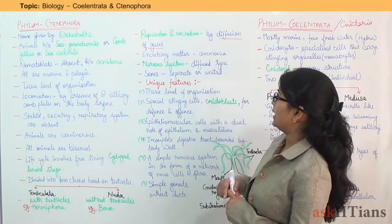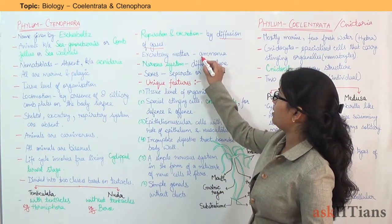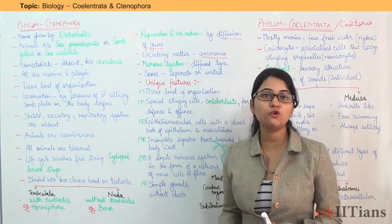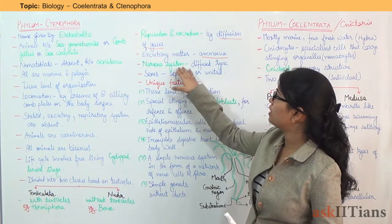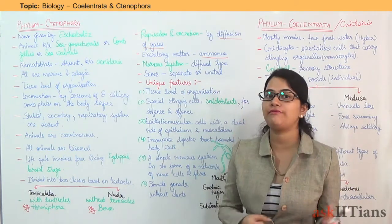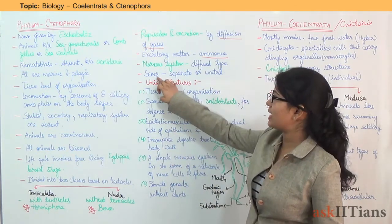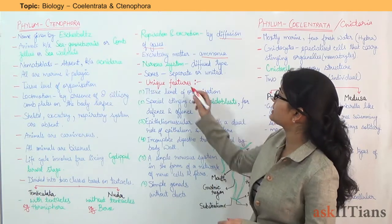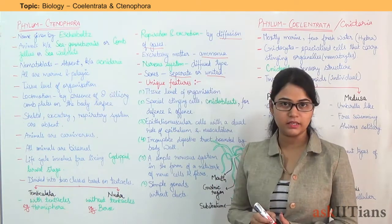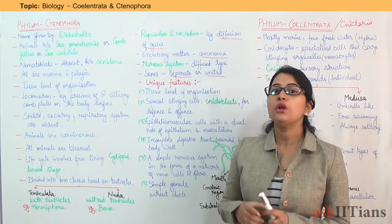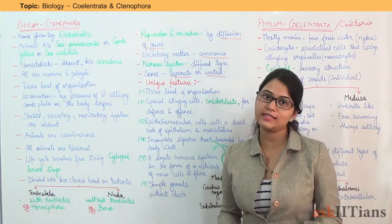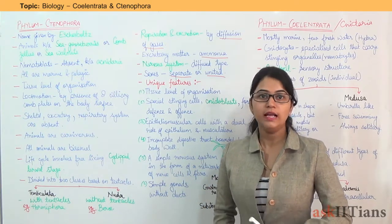The excretory matter is ammonia. The nervous system is of diffuse type, with a diffuse network. Sexes are either separate or united.